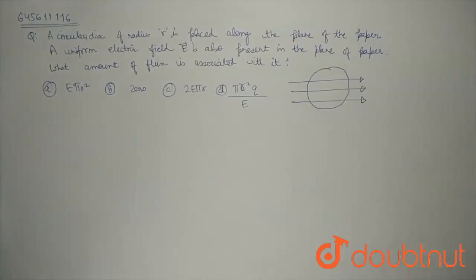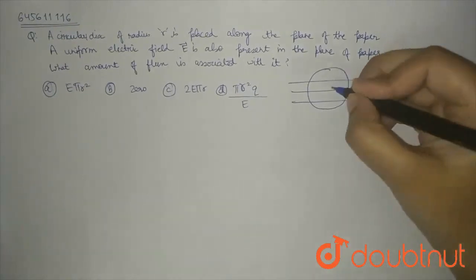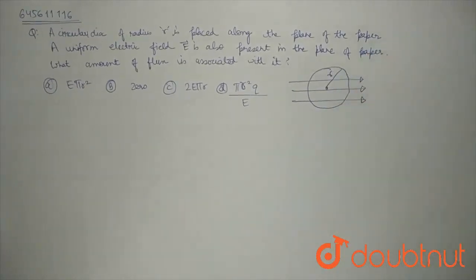So, we have a question which says there is a circular disc with radius of small r placed along the plane of the paper.